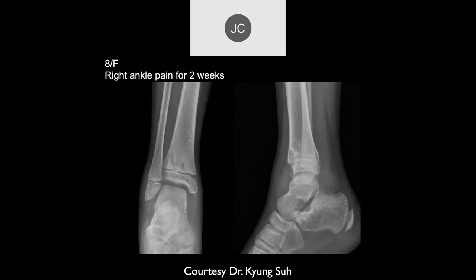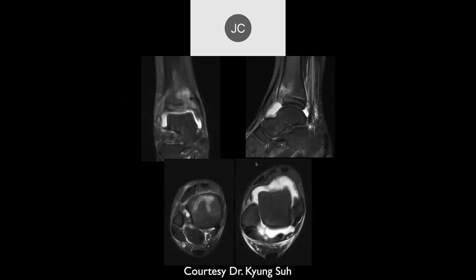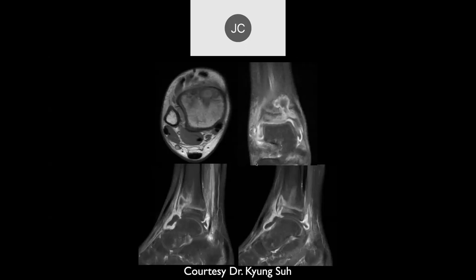Two weeks of right ankle pain. There's a small lucency anteriorly in the metaphysis of the tibia. On MRI with contrast, there appears to be a Brodie's abscess going into the epiphysis, possibly even an infected joint. This is another tuberculosis osteomyelitis case.